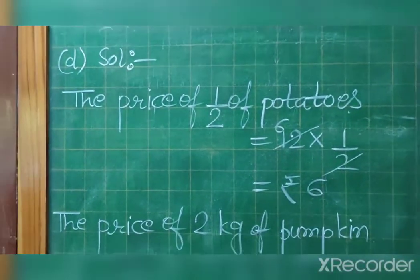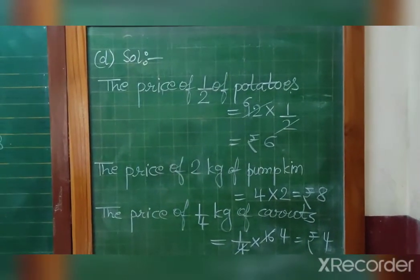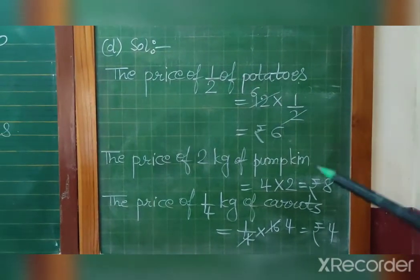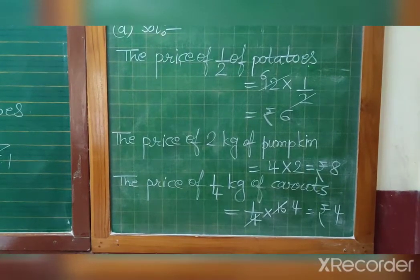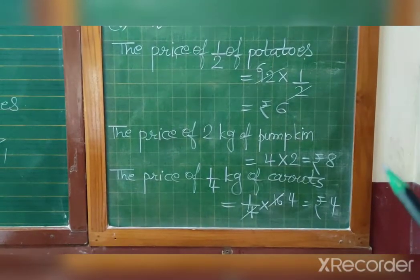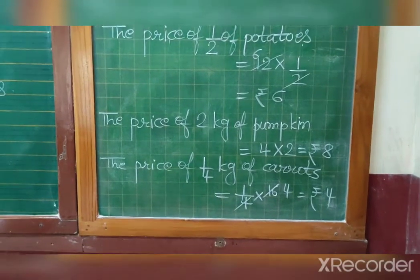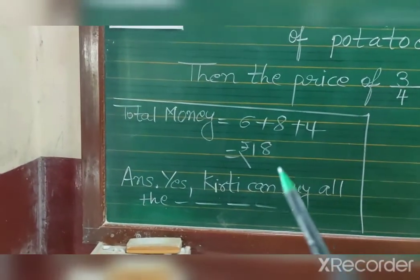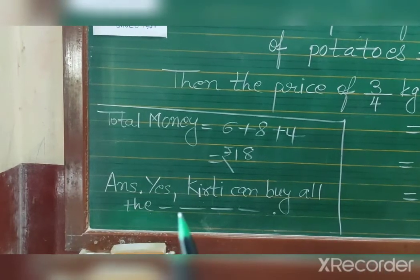Kirti's list: Kirti is having rupees 20. Price of half kg of potatoes: 12 into 1 by 2 equals rupees 6. Price of 2 kg of pumpkin: 4 into 2 equals rupees 8. Price of one-fourth kg of carrot: 16 into 1 by 4 equals rupees 4. Total: 6 plus 8 plus 4 equals rupees 18. Since 18 is less than 20, Kirti can buy all the things according to her list.